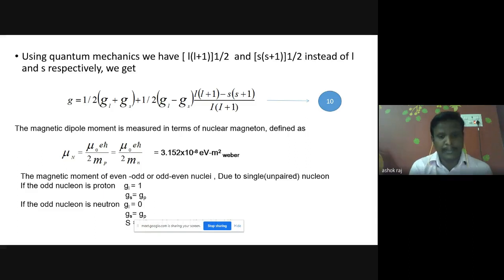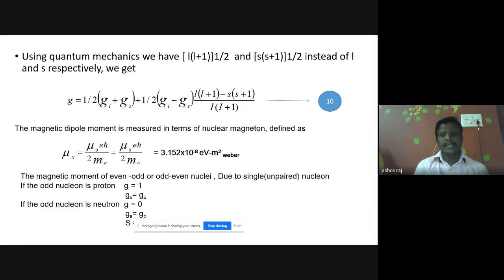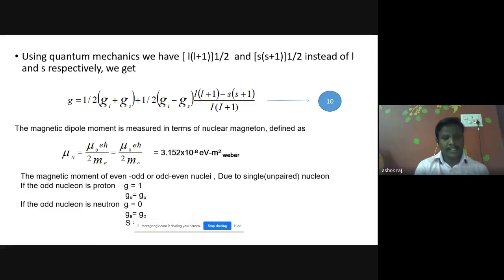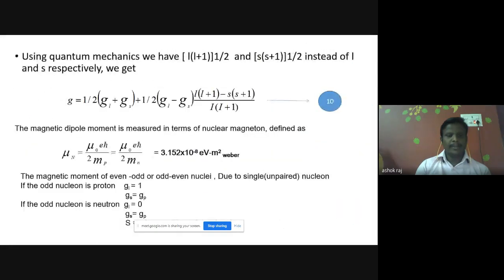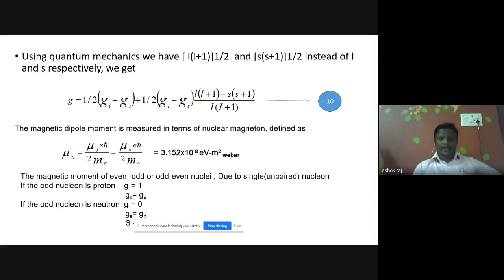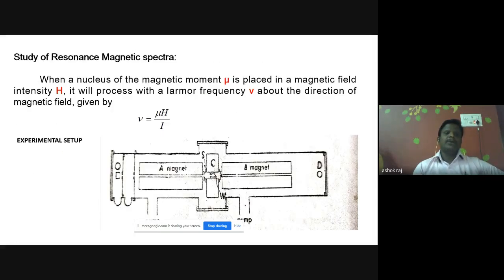Substituting the values of Planck's constant, g, and the masses of the proton and neutron, we get 3.152 times 10 to the power of minus 8 electron-volt meter squared. The magnetic moment of even-odd or odd-even nuclei is due to the single unpaired nucleon. For the odd nuclear proton, g-l equals 1 and g-s equals g-p. If the odd nucleon is a neutron, g-l equals 0 and g-s equals g-n. In this way we complete the theory of nuclear magnetic moment, where the formula is mu-N equals mu-naught times e times h-cross divided by 2m-p.